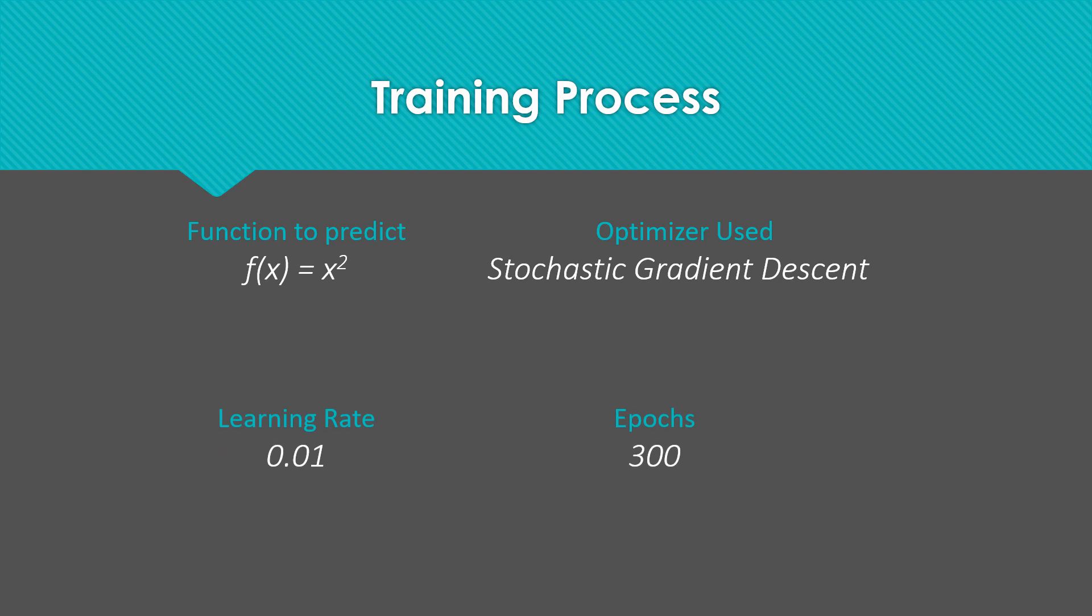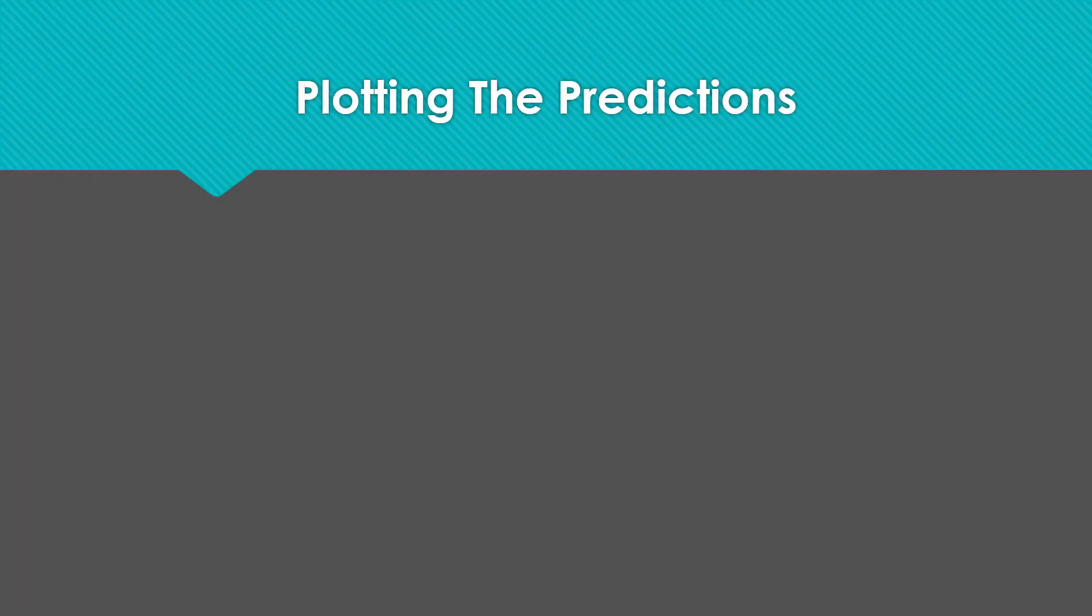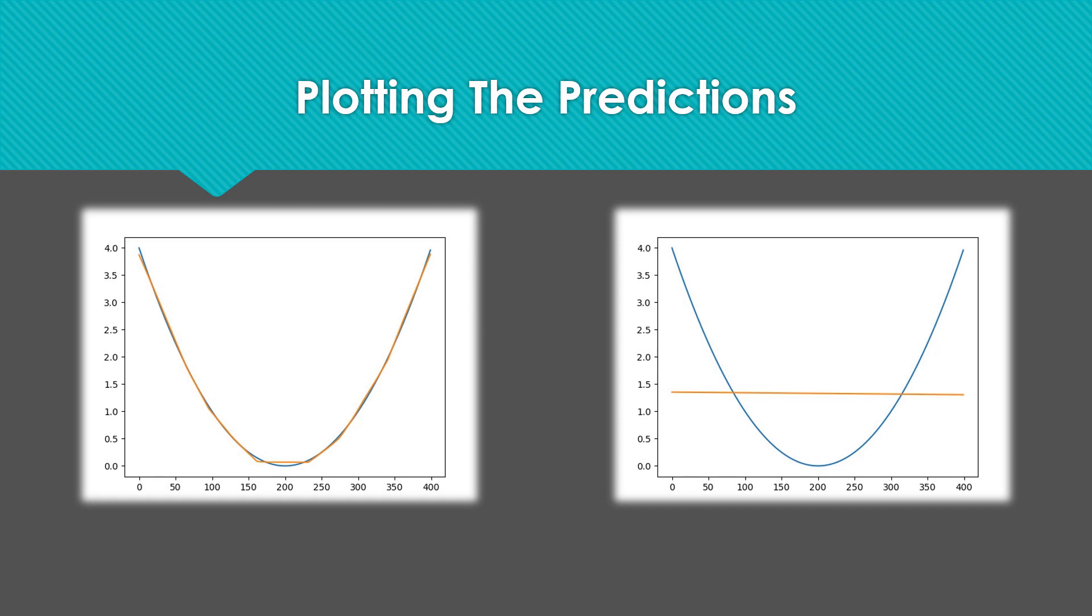Now let's look at the training process. How have I trained it? The function that I'm trying to predict is a squared function. The optimizer used is stochastic gradient descent. Learning rate is set to 0.01 and it is run for 300 epochs. Let's plot the graphs of the prediction. So as you can see, one network has predicted the function almost accurately, and the other function has predicted just a linear function which does a very bad job of predicting the function.